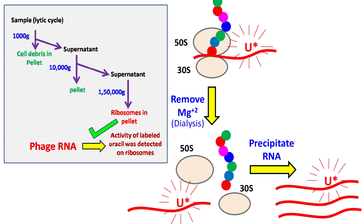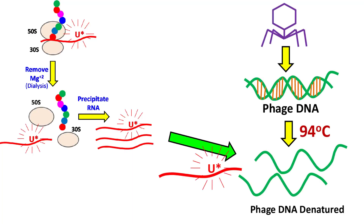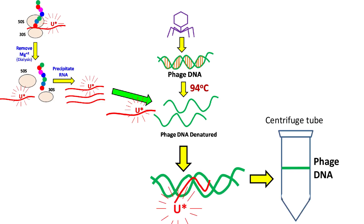The labeled RNA was precipitated and purified in large amounts. This labeled RNA was then mixed with bacteriophage DNA which had been heated at 94 degrees Celsius. When this mixture was allowed to cool, they performed density gradient centrifugation and found that the labeled RNA was hybridized with the phage DNA. This hybridization was also confirmed by transmission electron microscopy, and the RNA was termed messenger RNA, since it carried the information from the DNA to the ribosome.